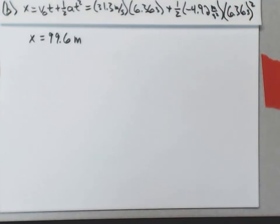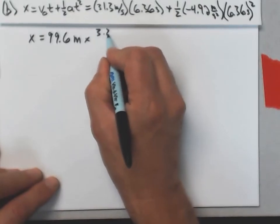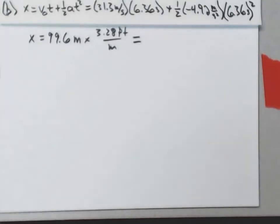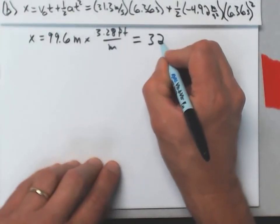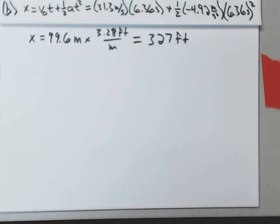Now, that's a ways. If I convert that into feet, multiply that by 3.28 feet per meter, I find out that the car travels 327 feet while it's coming to rest.